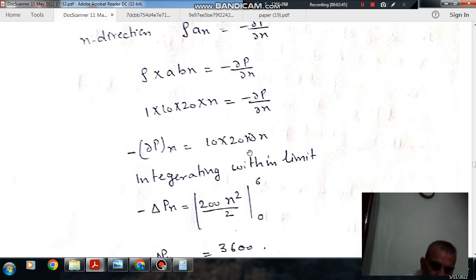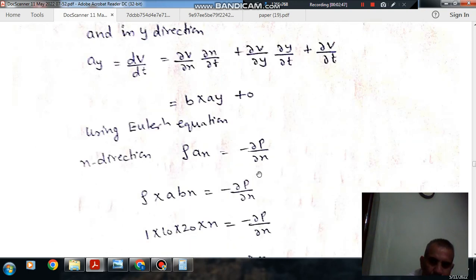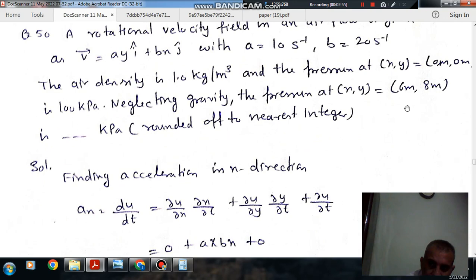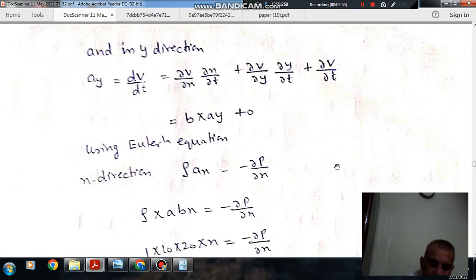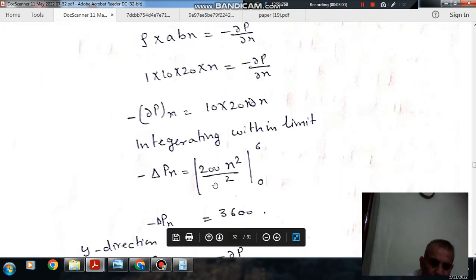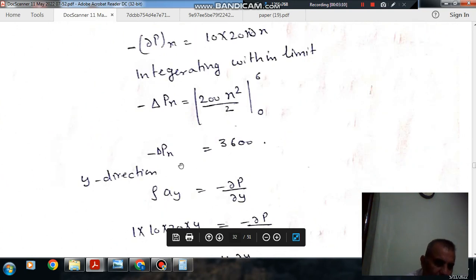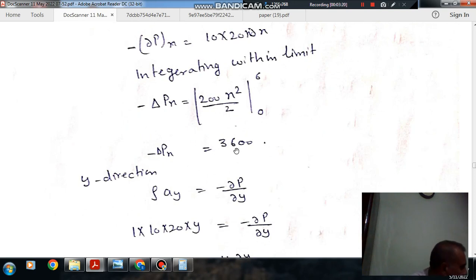That's minus 1 times 10 times 20X, so ∂P/∂x equals minus 200X. Integrating and putting the limit, this will give the change in pressure in X direction. The limit should be from X equals 0 to X equals 6, so that's minus 100X² evaluated from 0 to 6, giving ΔPx equals minus 3600 Pascal.